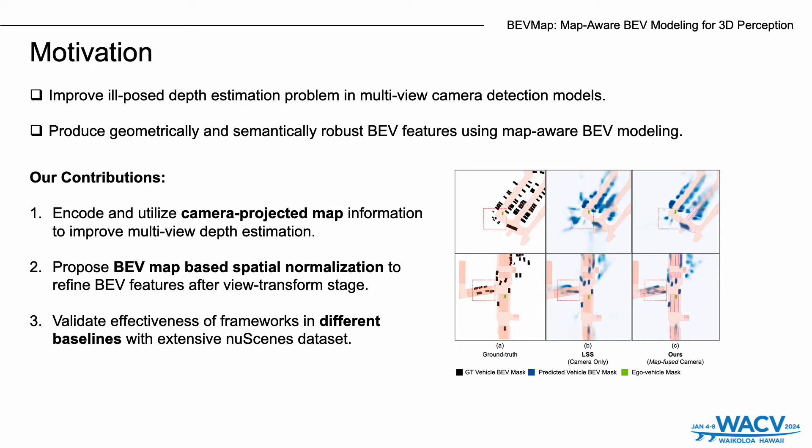In recent multi-view camera-based detection models, using BEV encodings to represent surrounding scenes is widely used and known to demonstrate robust performance in different downstream tasks such as segmentation and detection. However, in the view-transform process, the model directly predicts depth on 2D images without any clues, so there is an ill-posed depth estimation problem in multi-view camera detection models.